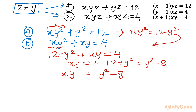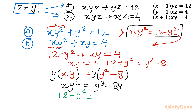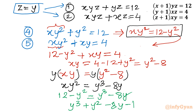I multiply both sides of xy = y² − 8 by y. The left side becomes xy², and the right side becomes y³ − 8y. Now xy² = 12 − y² from equation 4, so substituting: 12 − y² = y³ − 8y, which rearranges to y³ + y² − 8y − 12 = 0.